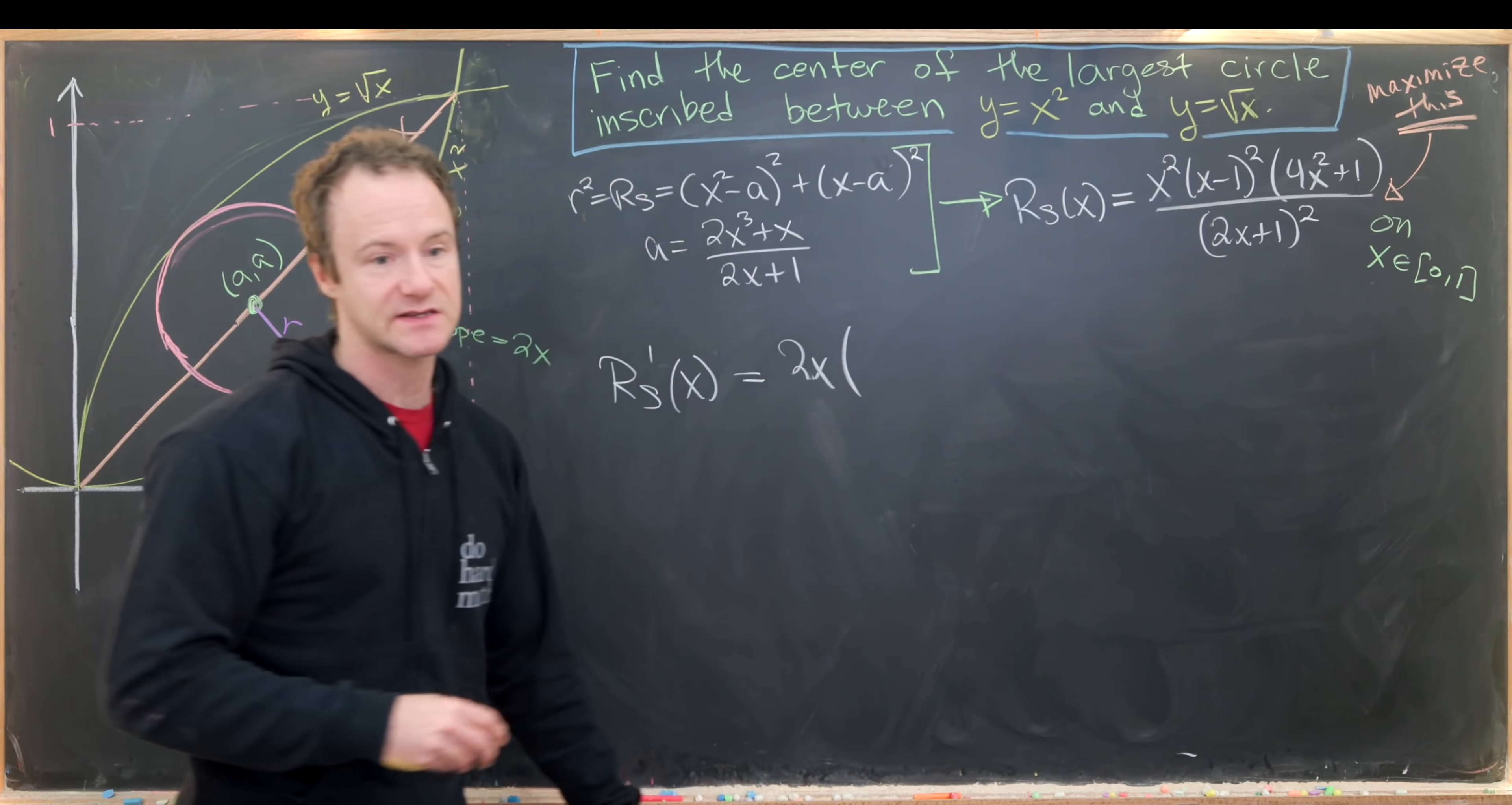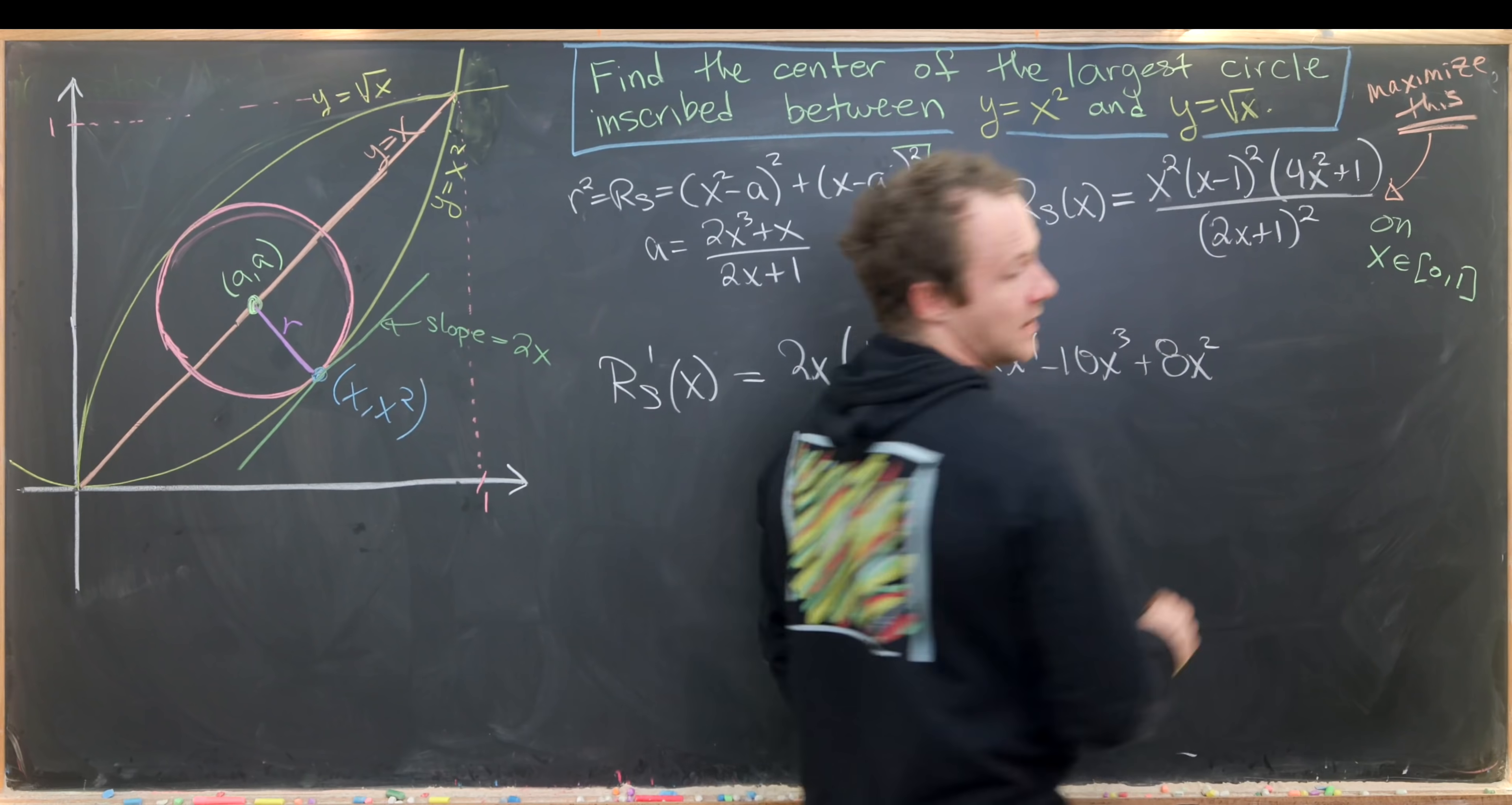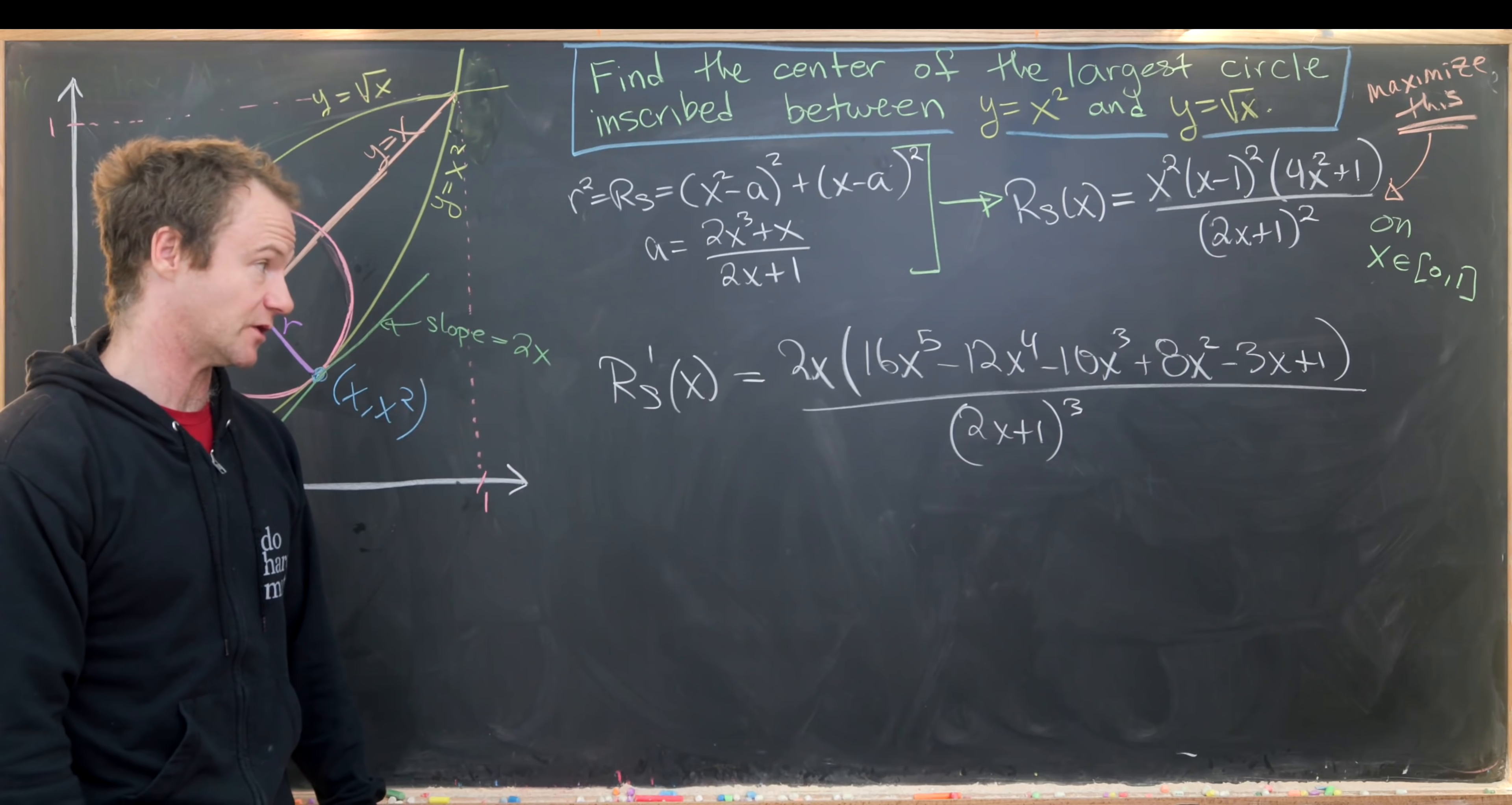What you end up with is: 2x times 16x to the fifth minus 12x to the fourth minus 10x cubed plus 8x squared minus 3x plus 1, all over 2x plus 1 quantity cubed. That's just kind of a grind, nothing really fancy going on here.